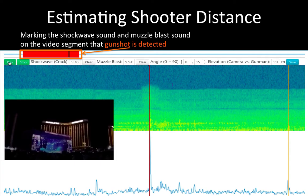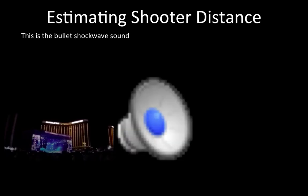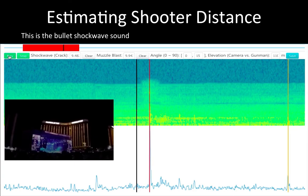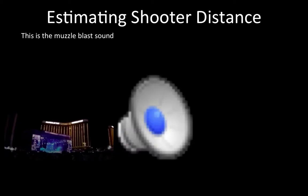In our interface, we utilize automatic gunshot detection, and the user can mark the muzzle blast sound and shockwave sound in the interface. Here is the shockwave sound — listen carefully. This is a very distinct crack. And this is the muzzle blast sound, which is harder to hear.